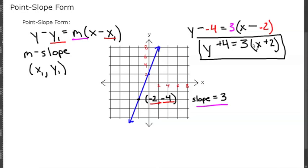So in point-slope form, this line is y plus 4 equals 3 times x plus 2. For point-slope form you only need to know the slope and one coordinate.